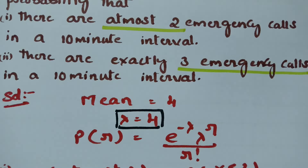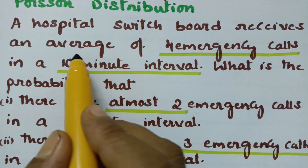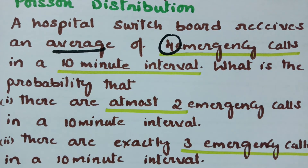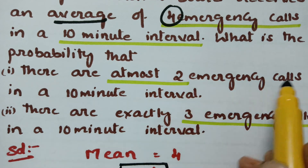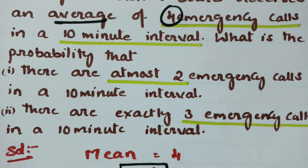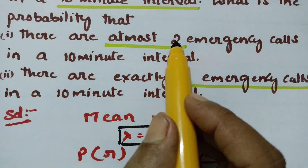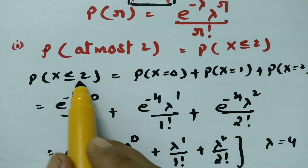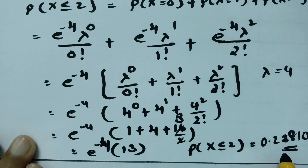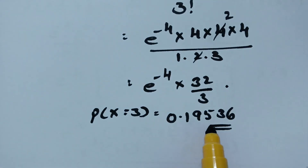To summarize: a hospital switchboard receives an average of 4 emergency calls, so lambda = 4. For at most 2 calls (X = 0, 1, 2), the probability is 0.23810. For exactly 3 calls (r = 3), the probability is 0.19536. Thank you so much for watching.